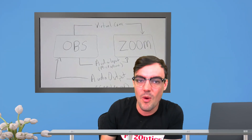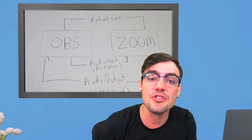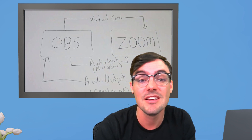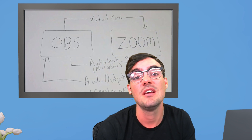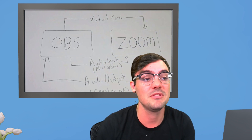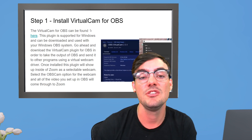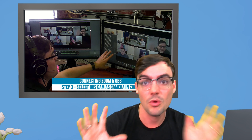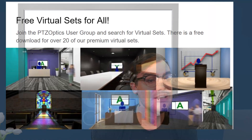If you have OBS, vMix, or Wirecast and you're bringing virtual sets into Zoom, you're essentially using a virtual camera output. This video is already at eight minutes so I won't go into it here, but we have tons of great videos on our Stream Geeks channel that go over that. Please check those out if you want to learn more — it involves using a virtual cam and connecting Zoom with OBS, vMix, or Wirecast.